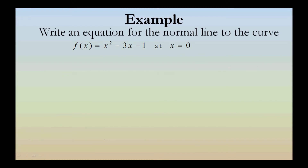Write an equation for the normal line to the curve f of x equals x squared minus 3x minus 1 at x equals 0.